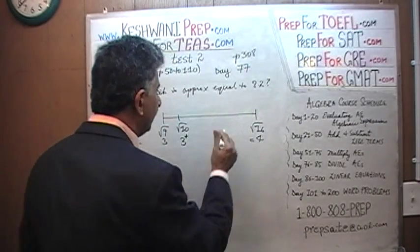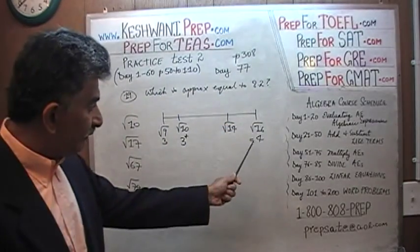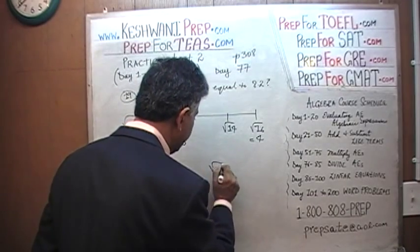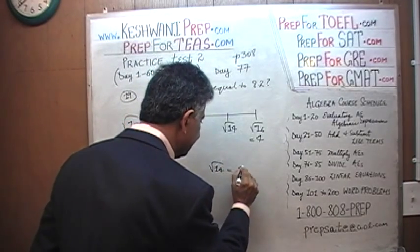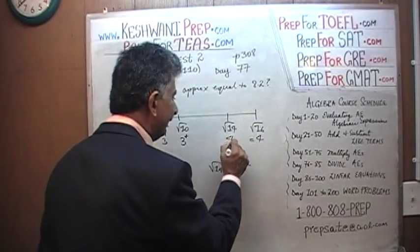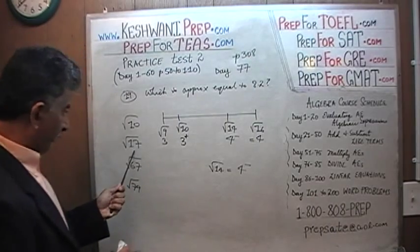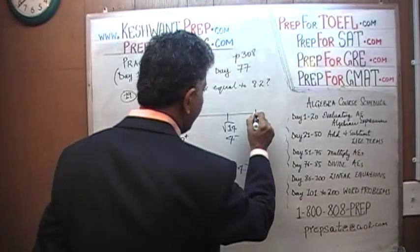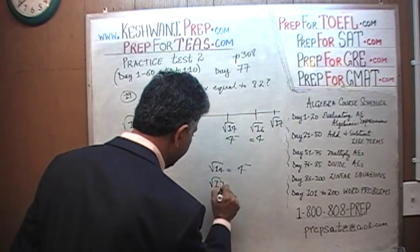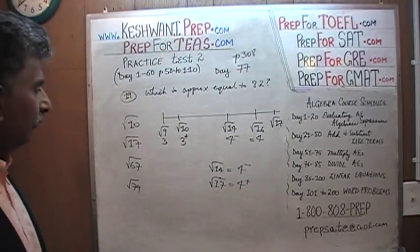Similarly, if we were looking at the square root of 14, it falls towards the right end of the spectrum between 3 and 4, so the square root of 14 is equal to something a little less than 4. The square root of 17 falls just past 4, and therefore the square root of 17 is going to be just a little over 4 — 4 plus.